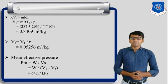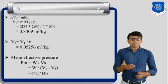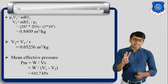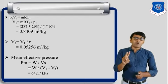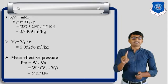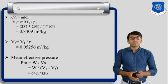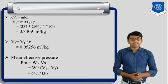So in this lecture we discussed three examples: two examples of the Otto cycle and one example of the diesel cycle. Thank you.